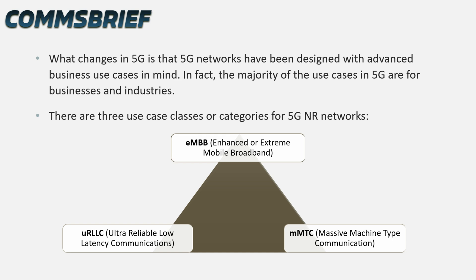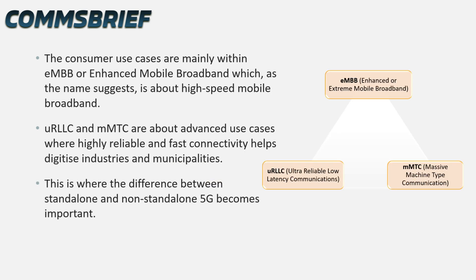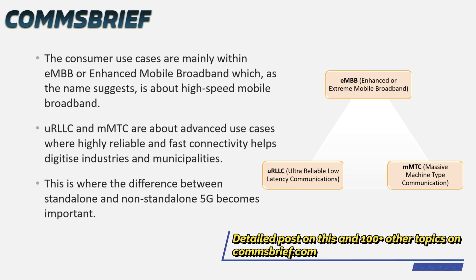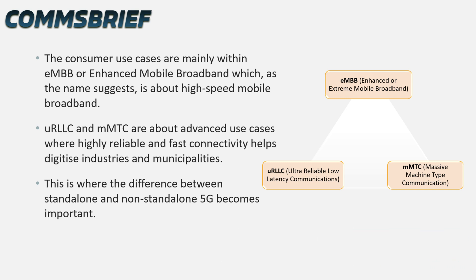There are three use case classes or categories for 5G networks. You have eMBB — enhanced or extreme mobile broadband; mMTC — massive machine type communication; and URLLC — ultra-reliable, low-latency communications. The consumer use cases are mainly within eMBB, which is about high-speed mobile broadband. URLLC and mMTC are about advanced use cases where highly reliable and fast connectivity helps digitize industries and municipalities. This is where the difference between standalone and non-standalone 5G becomes important.